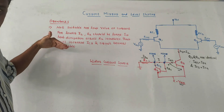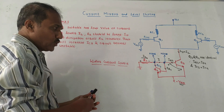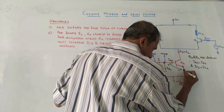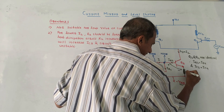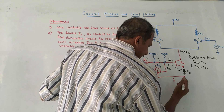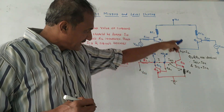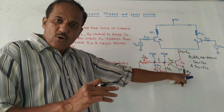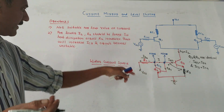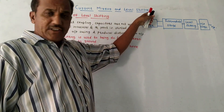To avoid these drawbacks, a modified version called the Widlar current source can be used. The entire circuit remains the same, except one additional resistor R3 (or RE3) is connected at the emitter of Q3, with that terminal connected to ground and VCC applied at R2. This added emitter resistance improves stability and is called the Widlar current source or modified current source.